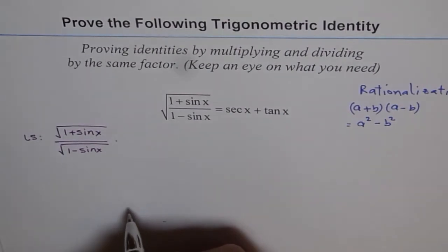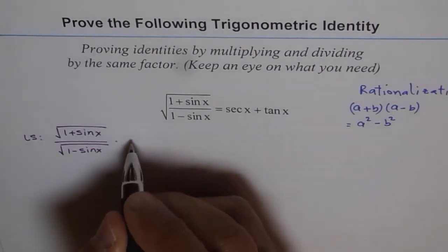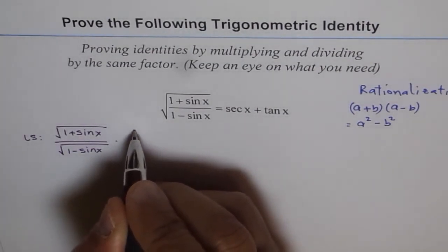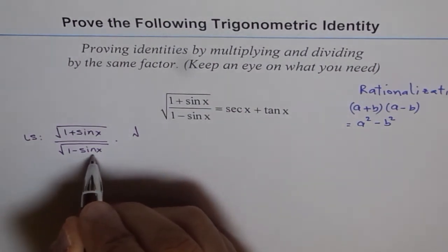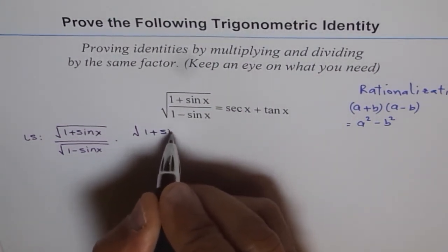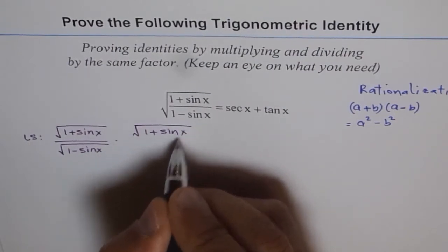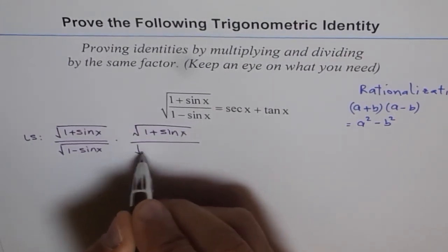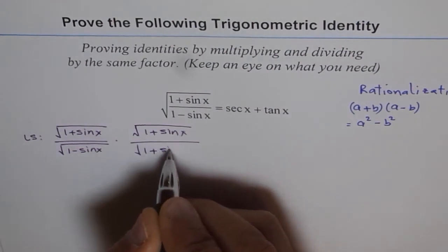What we will do is we will multiply and divide by the conjugate of 1 minus sin x, which is 1 plus sin x, divided by 1 plus sin x.